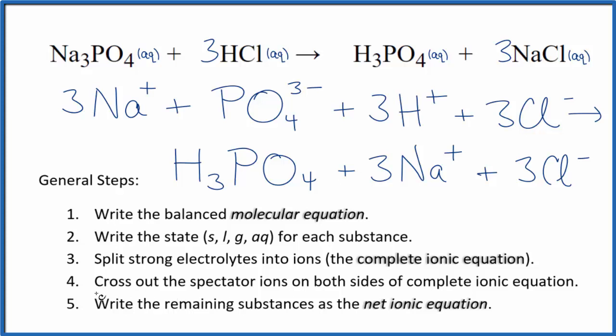Now we can cross out spectator ions. They're on both sides of that complete ionic equation. So the top is the reactants, bottom is products. In the reactants, there are three sodium ions. We also have those in the products, so they're spectator ions. Get rid of those.